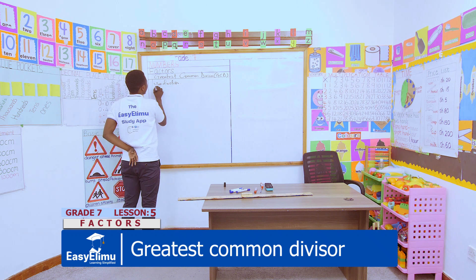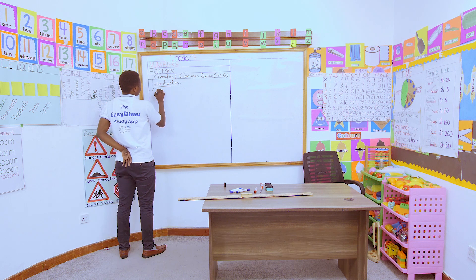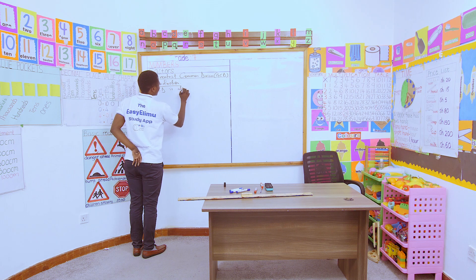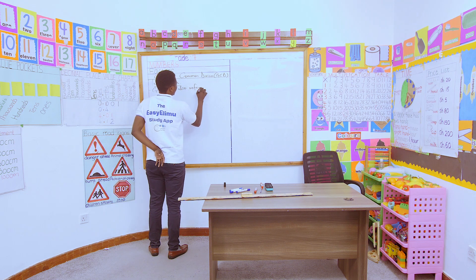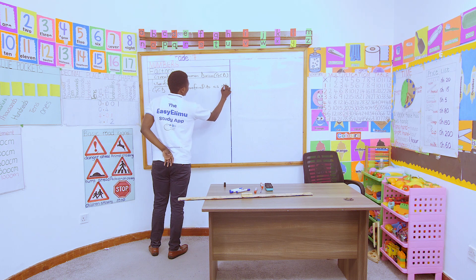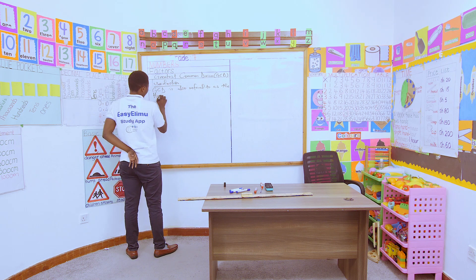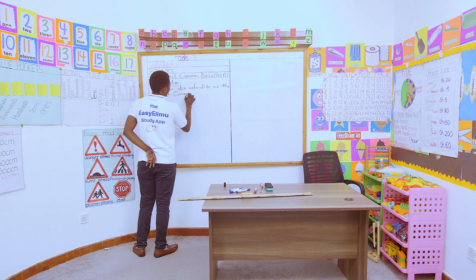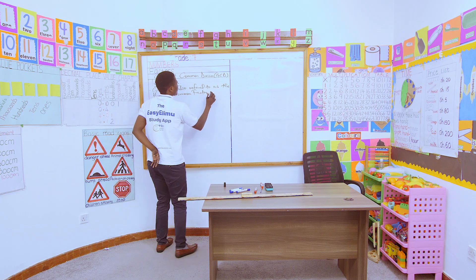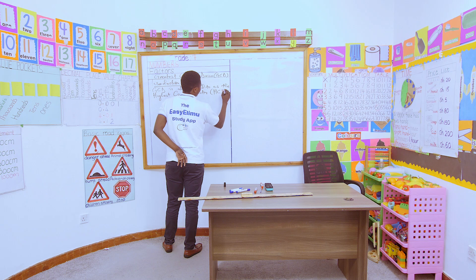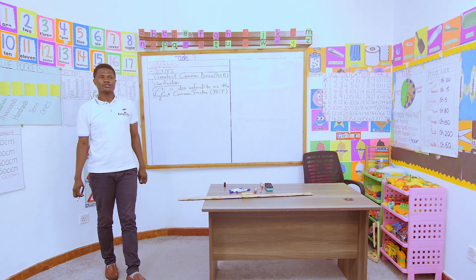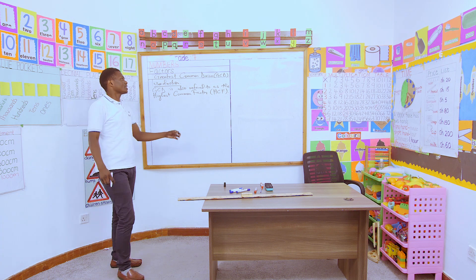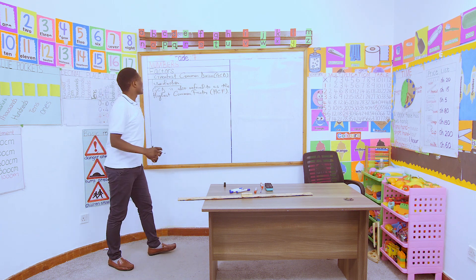GCD is also referred to as the highest common factor, abbreviated as HCF. So if you see a question in an exam asking you to get the HCF of the following numbers, then that is the same as GCD. Let us look at an example.